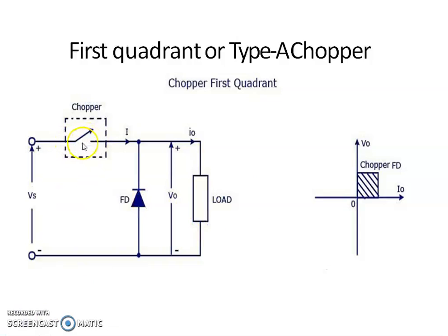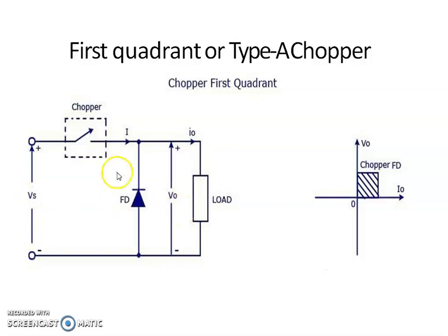When the switch is closed, the output voltage V0 is equal to source voltage Vs. When the switch is open, the energy stored in the load freewheels through the freewheeling diode FD and the output voltage is equal to zero. In this type of chopper, V0 is always less than Vs. The average output voltage V0 equals Vs multiplied by duty ratio alpha, where alpha equals T-on divided by total time period (T-on plus T-off). Type A chopper is a step-down chopper providing both positive voltage and positive current.